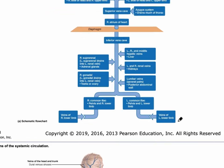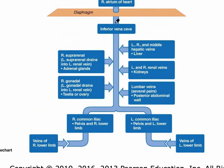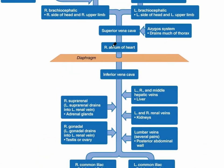The inferior vena cava is going to receive blood from the lower limb. The right and left common iliac veins take deoxygenated blood and waste products from those tissue areas and merge back into the inferior vena cava. The inferior vena cava travels all the way up back into the right atrium. It drains the entire lower part of the body — for example, the left and right renal veins dump into the inferior vena cava.